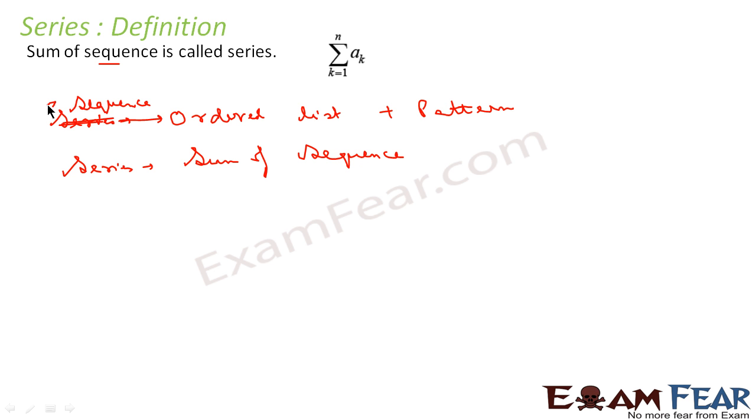Please note, don't get confused. Sequence is ordered list or pattern. For example, when I say 1, 2, 3, 4, this is a Sequence. 1, 2, 3, 4 is an ordered list which is a pattern. And the pattern here is the difference is 1. When I talk about Series, Series is sum of these numbers.